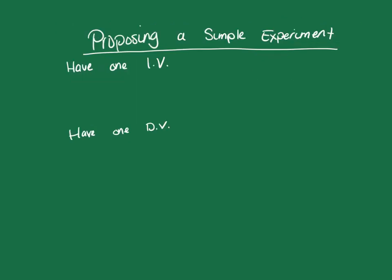If you are proposing a simple experiment, you should have one independent variable and one dependent variable. The independent variable must be something you can manipulate and the dependent variable must be something you can measure. The independent variable should be manipulated simply — we shouldn't involve actors or complex multiple scenarios. For a simple experiment, it's best to have just two levels of the IV, such as exposure to a condition and lack of exposure, where the experimental group receives it and the control group does not.